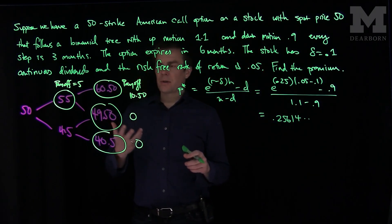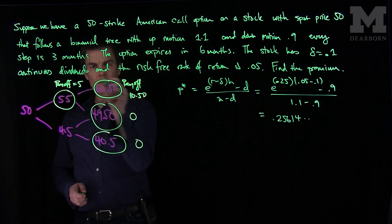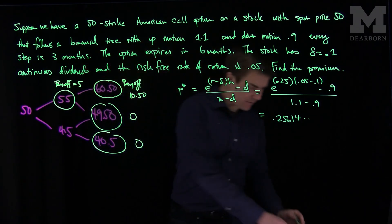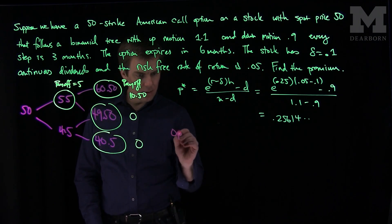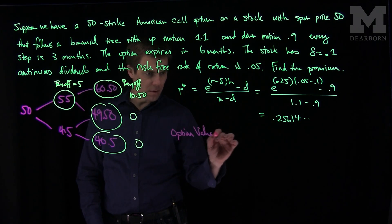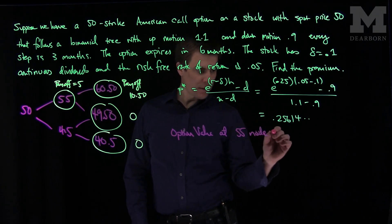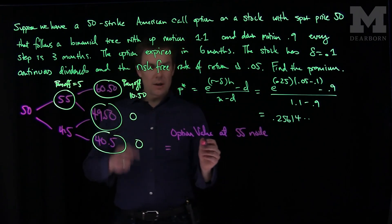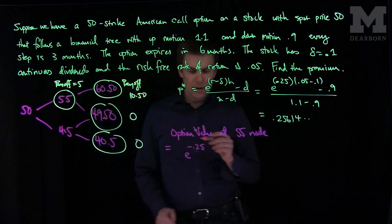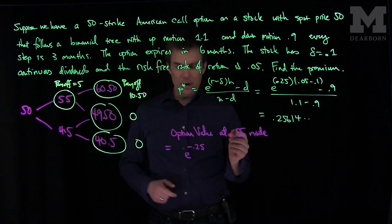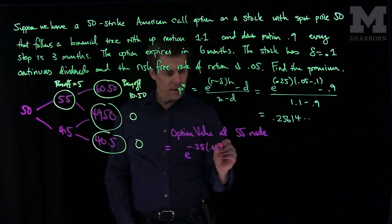Now what we can do is write down the valuation of the stock. The value of the option at the 55 node will be equal to the discount factor, e to negative 0.25, that is the step size, a quarter of a year, times the risk-free rate 0.05.